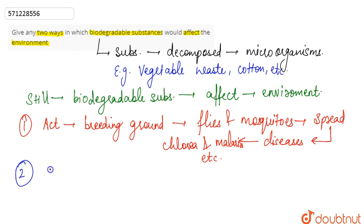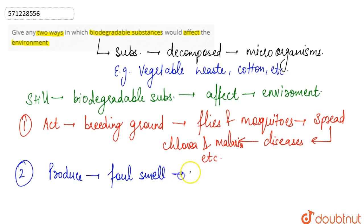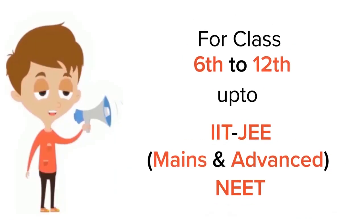Apart from acting as a breeding ground, biodegradable waste also produces a very bad foul smell that can further lead to air pollution. So these are the two effects of biodegradable waste that affect the environment.